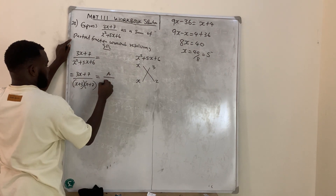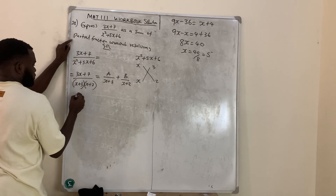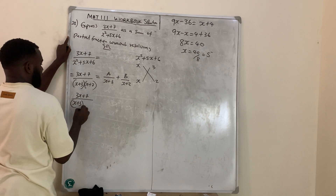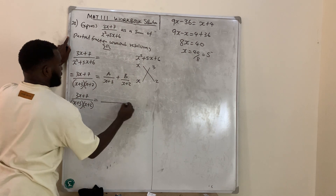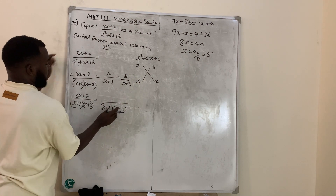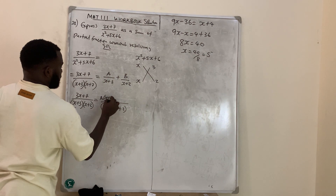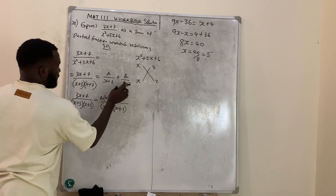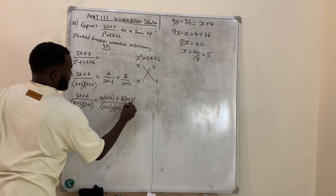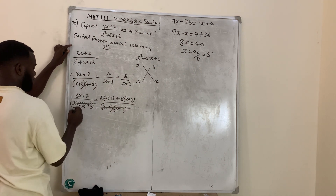To separate it, I have A over (x + 3) plus B over (x + 2). So: (3x + 7) over [(x + 3)(x + 2)] equals, with LCM (x + 3)(x + 2). When these divide, I'm left with A(x + 2) plus B(x + 3). You can watch my video on partial fractions if I am rushing.